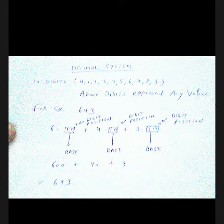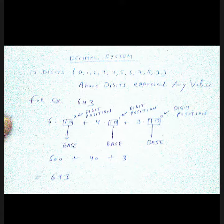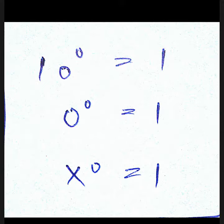In the decimal system, 10 digits are there: 0, 1, 2, 3, 4, 5, 6, 7, 8, 9. These digits represent any value. For example, 643 equals 6 into 10 to the power 2, plus 4 into 10 to the power 1, plus 3 into 10 to the power 0. Here 10 is the base, and 0, 1, 2 are the digit positions. So when we calculate this: 600 plus 40 plus 3, we get 643. This is how we calculate the decimal value.